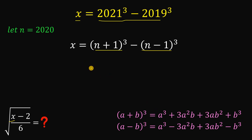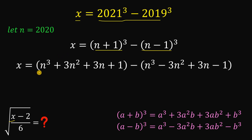Using this expansion, we can rewrite x as follows: (n³ + 3n² + 3n + 1), which is the expanded form of (n+1)³, minus the quantity (n³ − 3n² + 3n − 1), which is the expanded form of (n−1)³.